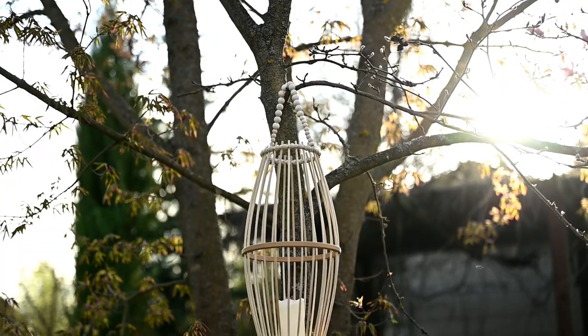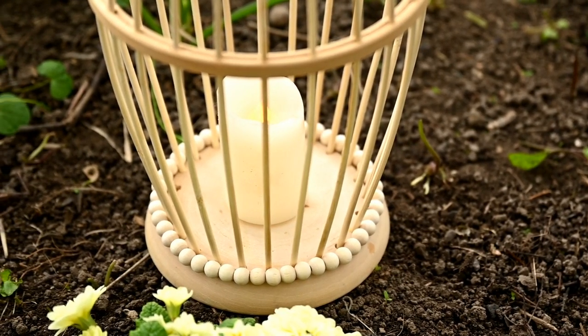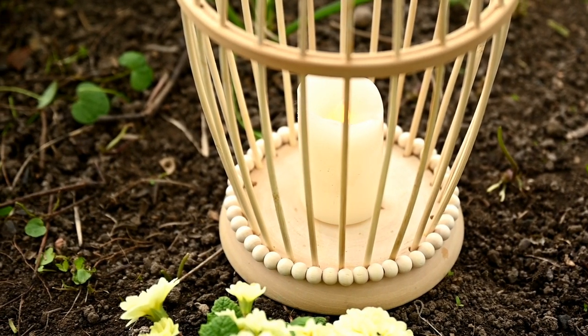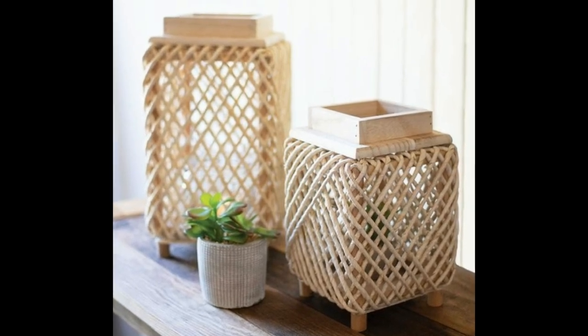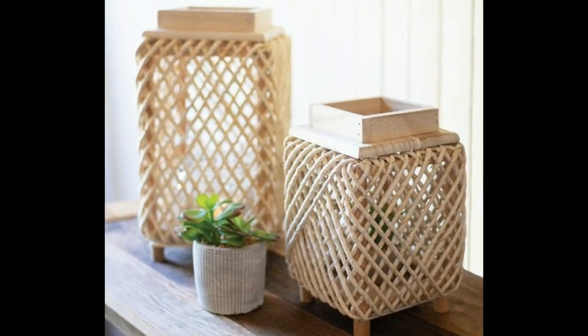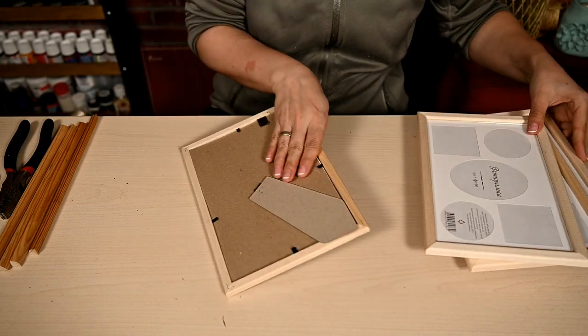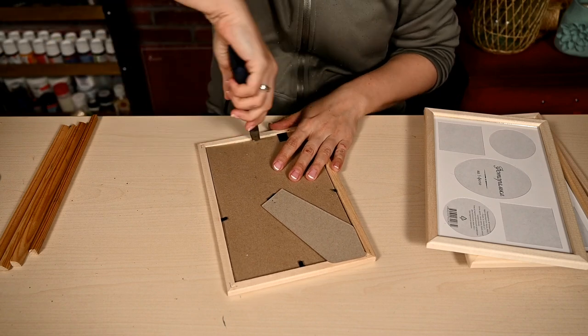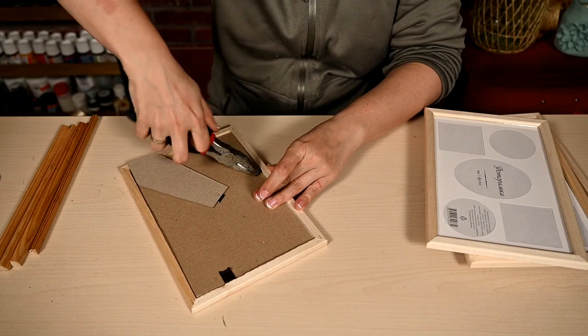The second lantern I've decided to recreate was this lovely woven rope and wood lantern from A Colorful Farmhouse. For making a base I'll use Dollar Tree wooden photo frames. I'm removing the glass holders and setting aside the glass and the backs.